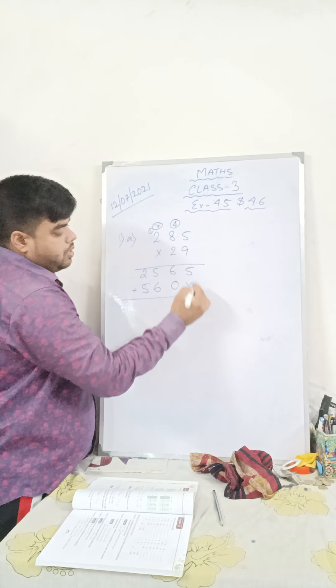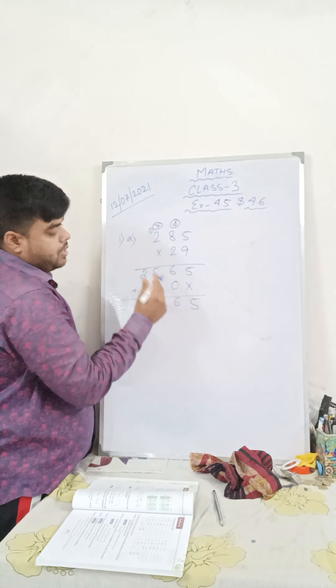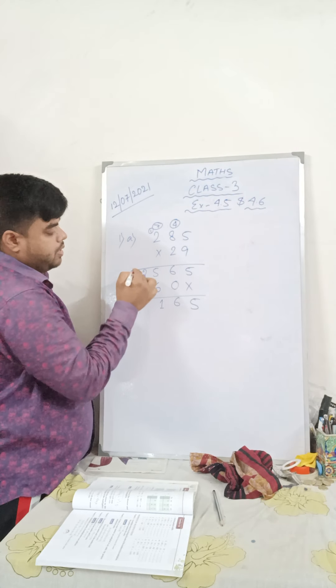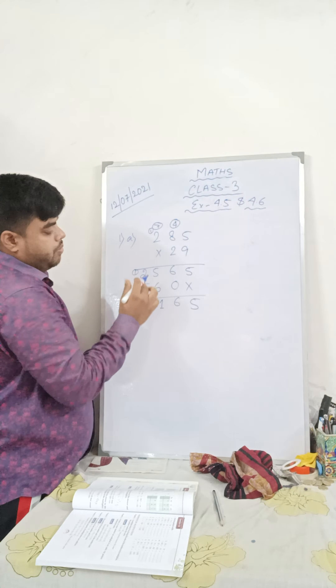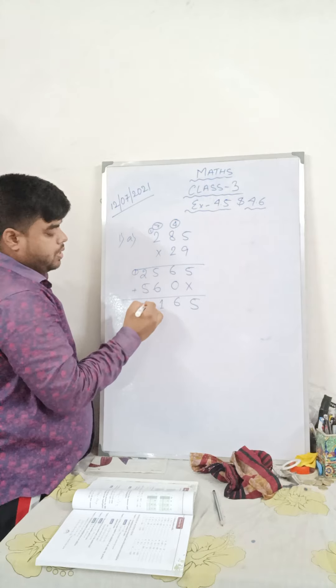Now you add: 5 plus 6 is 11, 1 in hand. 5 plus 2 is 7, plus 1 is 8.